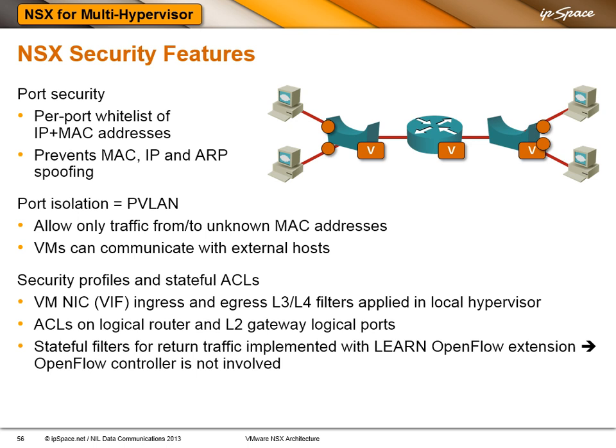There are security profiles that you can apply to individual VM NICs. They are layer 3 and layer 4 filters applied in the local hypervisors, and now you have full-blown access control lists that you can implement on layer 2 ports or on logical routers, providing even better packet filter functionality.